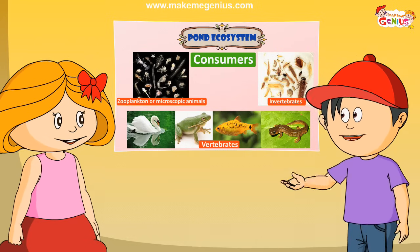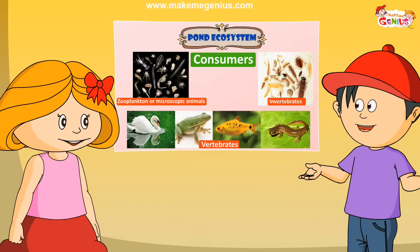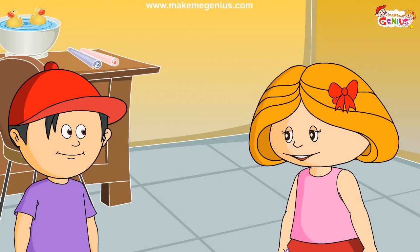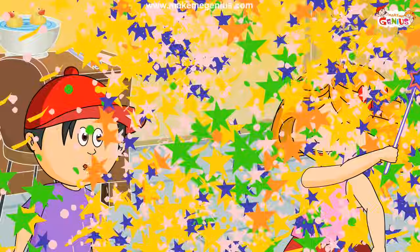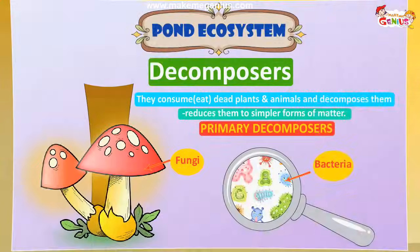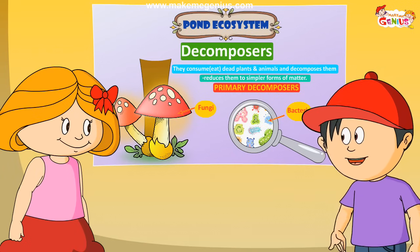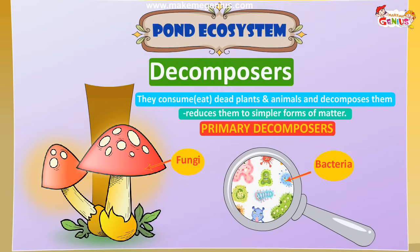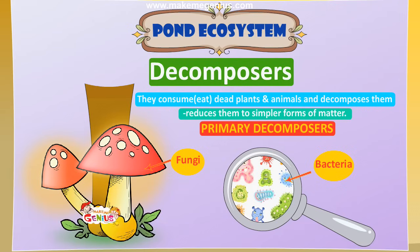Now I have learnt so much about consumers. Can you tell me a few things about decomposers? Here is the decomposers chart. So fungi and bacteria are the main decomposers? Yes, they eat dead plants and animals and decompose them so that they can be used by producers. So it is a full food chain in the pond? Yes, every ecosystem has several food chains.